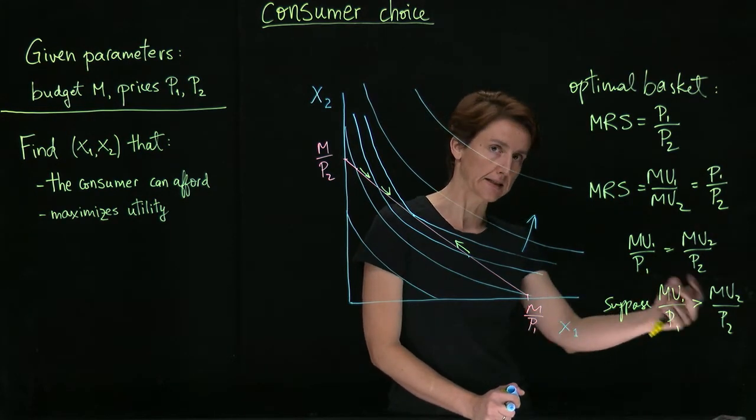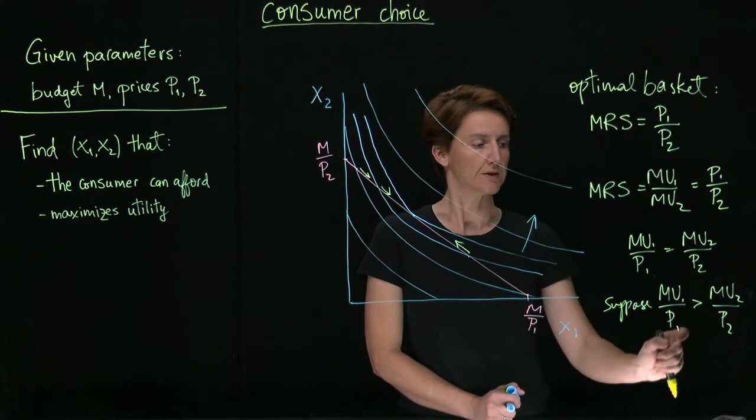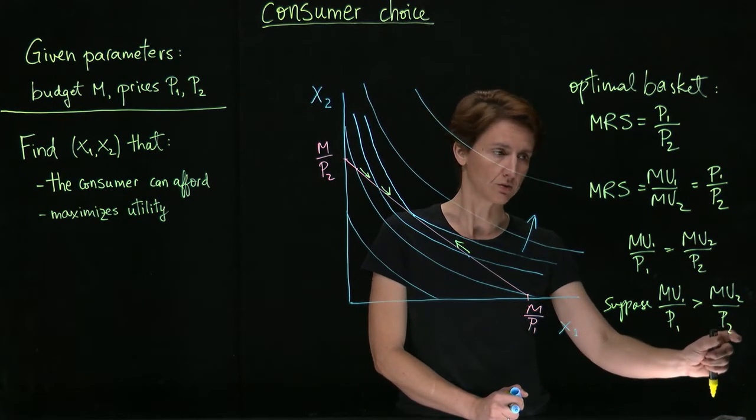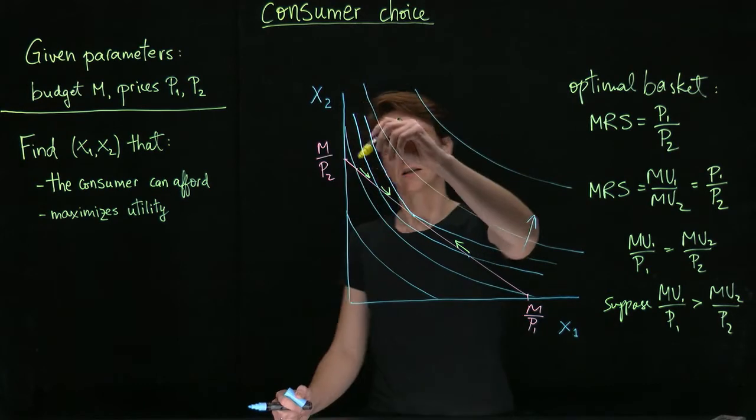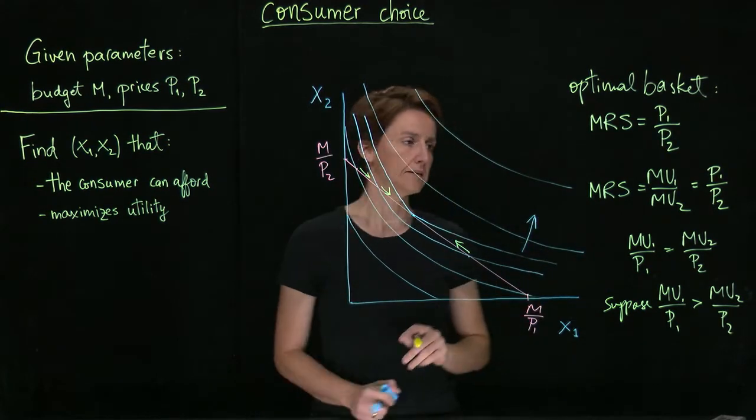We would move some of our spending on good two into spending on good one. In other words, in this graph, we would move in this direction.